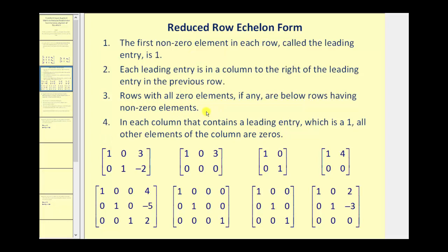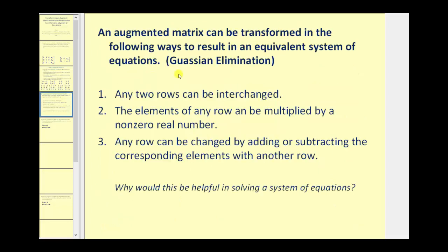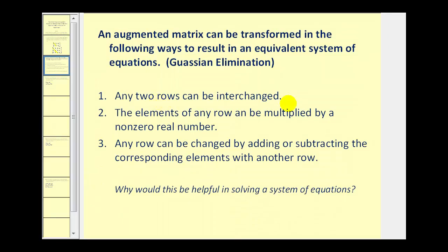Let's also review how we transform an augmented matrix, often referred to as Gaussian elimination. Number one, any two rows can be interchanged. Number two, the elements of any row can be multiplied by a non-zero real number. And then number three, any row can be changed by adding or subtracting the corresponding elements with another row.